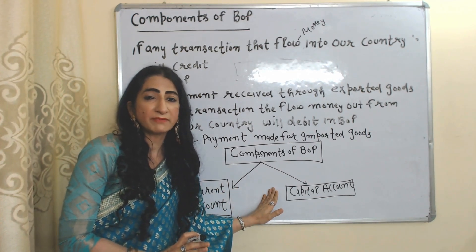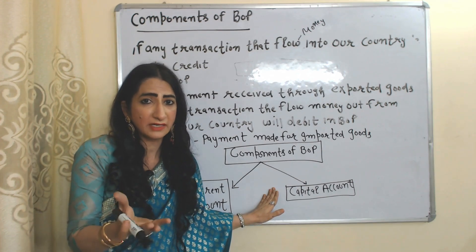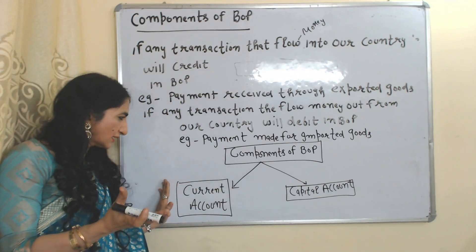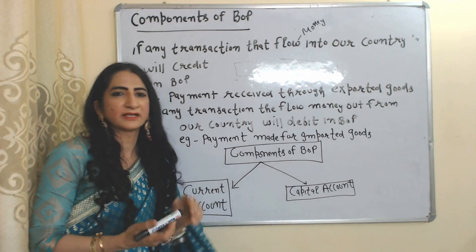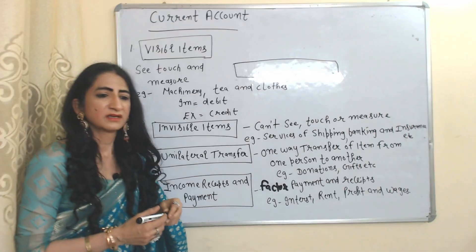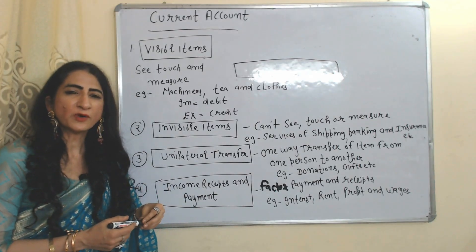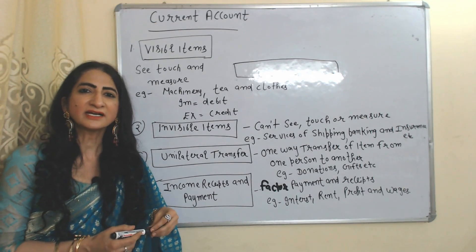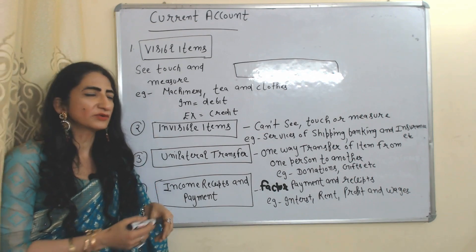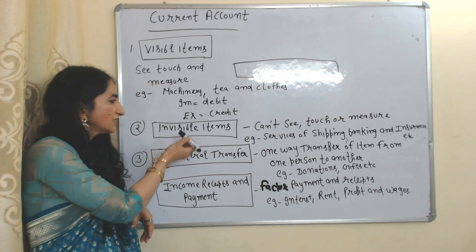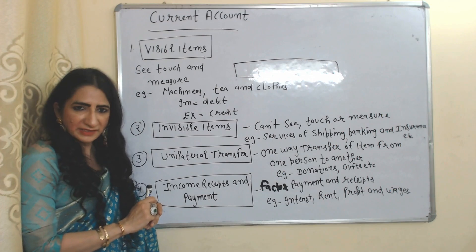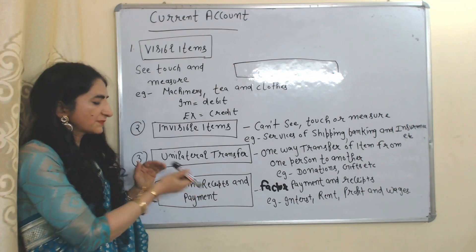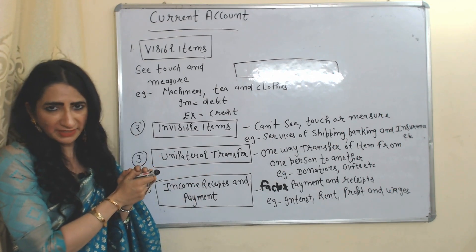Components of Balance of Payment means what we include — we include Current Account and Capital Account. First, we will see Current Account. Current Account includes visible items, invisible items, unilateral transfers, and income receipts and payments.